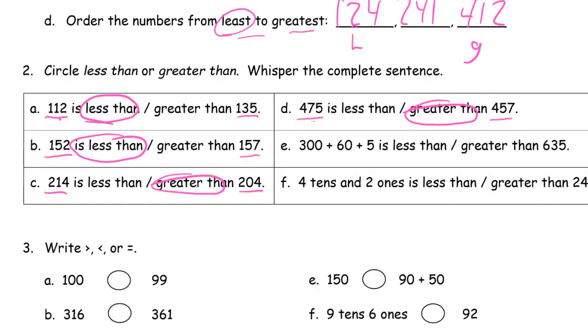And then we're looking at an expanded form. 300 plus 60 plus 5. You might want to just write out 300, that's 365. Just so you can look at it and compare it directly as a number. Is that less than or greater than 635? Well, 635 has a lot more hundreds. So this is going to be smaller, so it's less than. And now here we have, in unit form, four tens and two ones. That's the number 42. Is that greater than or less than 24? 42 is greater than 24. So we'll circle greater than.